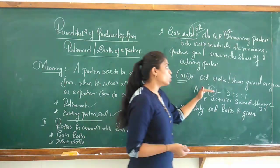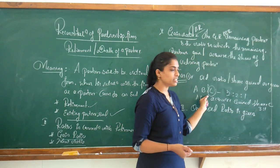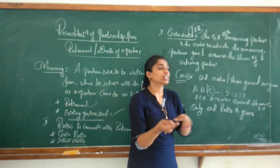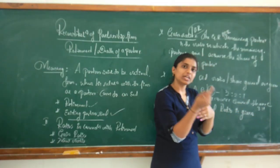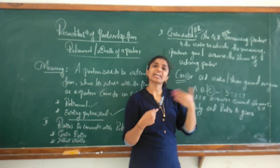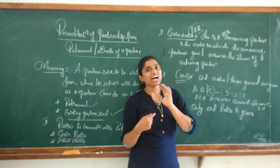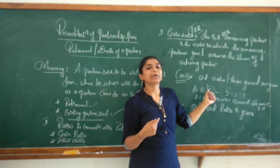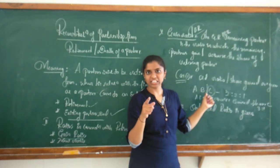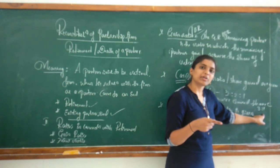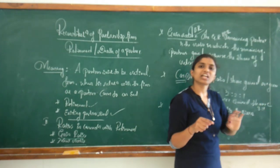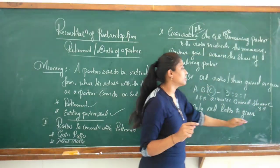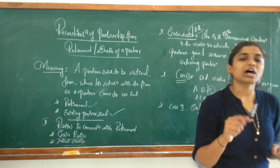Since the share gained is directly given as 3:1, you can write the gain ratio directly as 3:1. This is the direct type of question. So when the old ratio and the share gained are both given, the answer for the gain ratio is simply the share gained, which is 3:1.